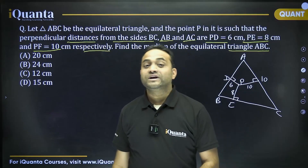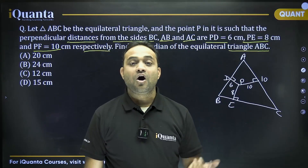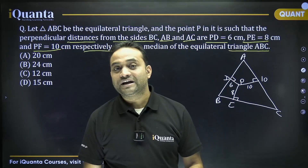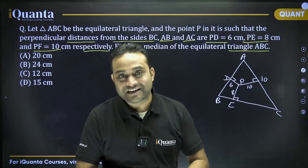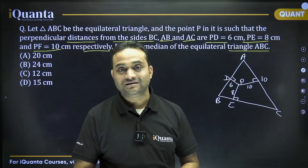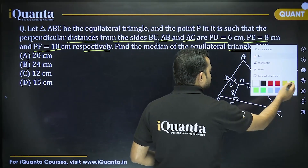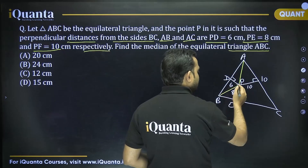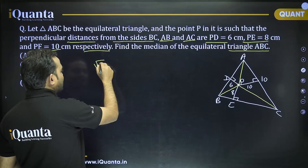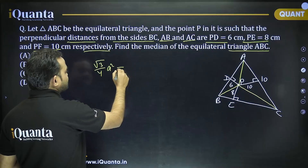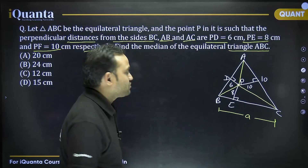In an equilateral triangle, the median, altitude, angle bisector, and perpendicular bisector all have equal lengths. So finding the altitude gives us the median. Connecting point P to all three vertices divides the triangle into three smaller triangles.